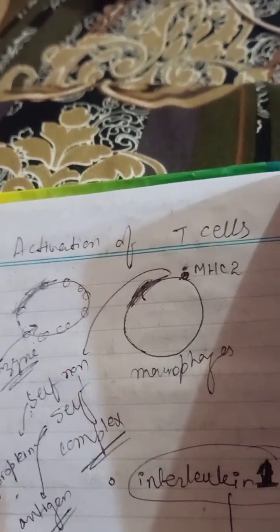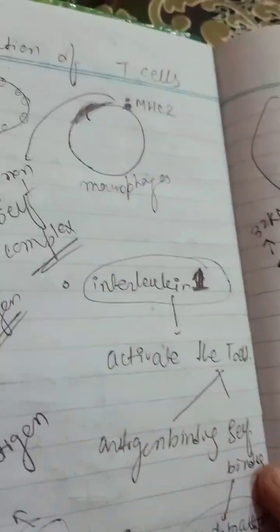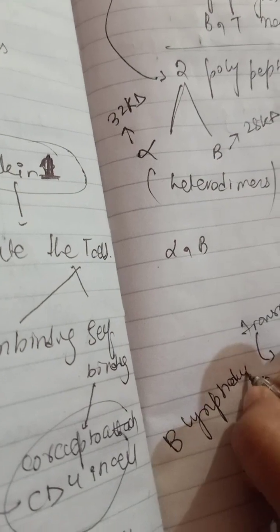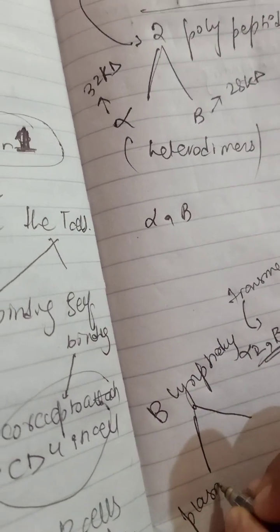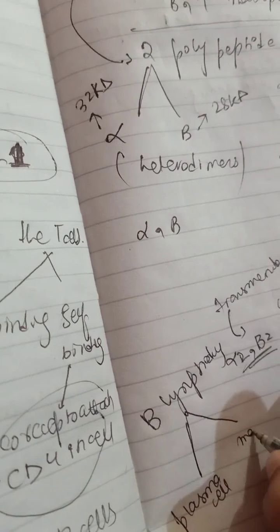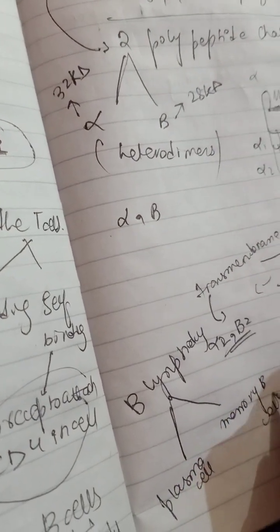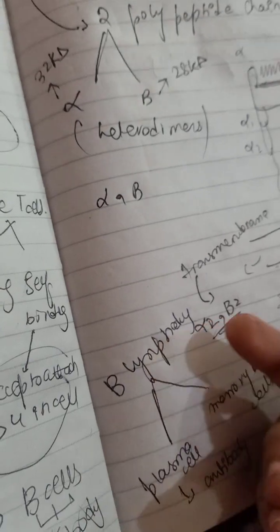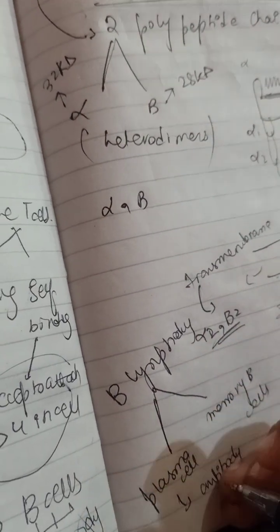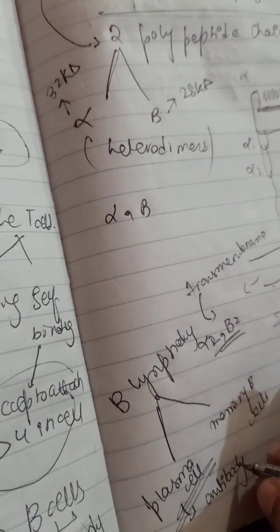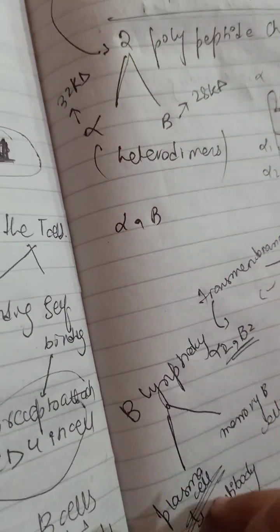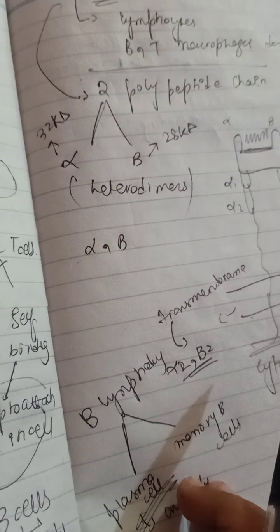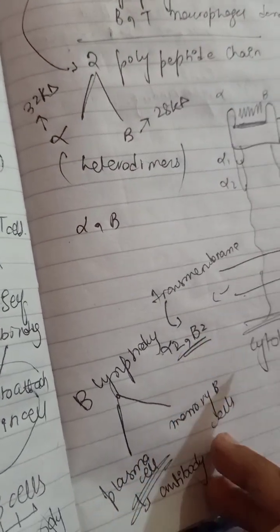B lymphocytes are divided into two groups: first is the plasma cell and second is the memory B cell. Plasma cells will make the antibody. Plasma cells basically make the antibody for the MHC2 pathogen that is here — they make an antibody to kill the antigen, not the cell. Memory B cells will take the record of the MHC2 antigen.